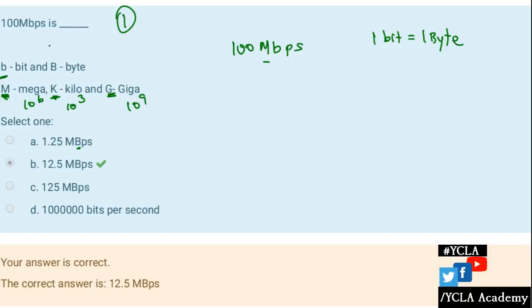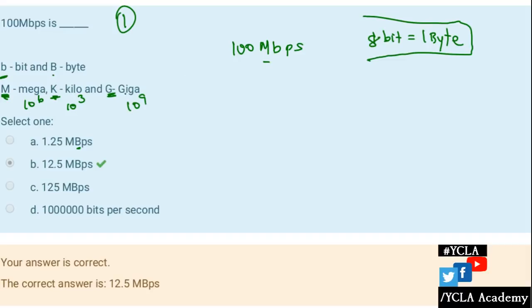In the question, we have to know two issues. If you want to talk about small b, that is bit, capital B is a byte. 8 bits is equal to 1 byte. Capital M is 10 to the power 6, capital K is 10 to the power 3, and capital G is 10 to the power 9.